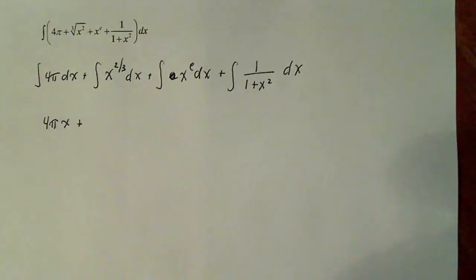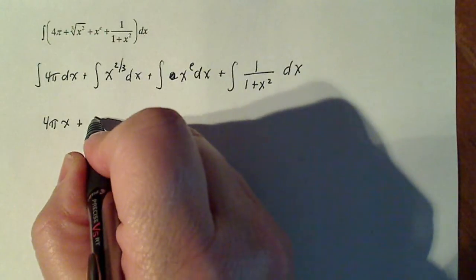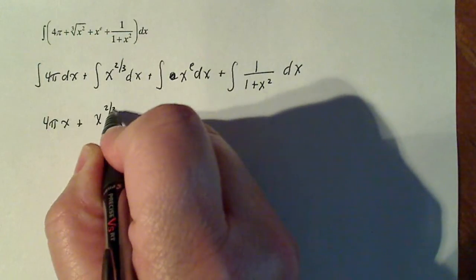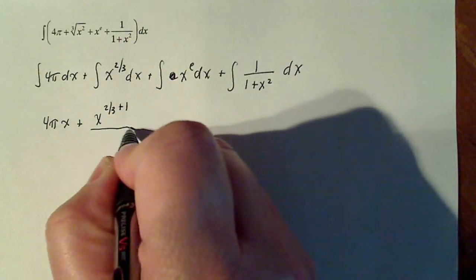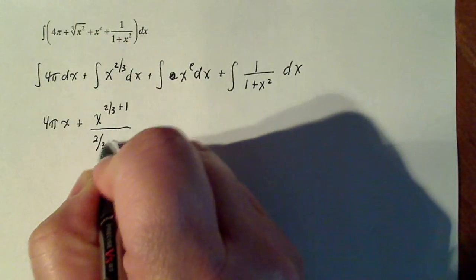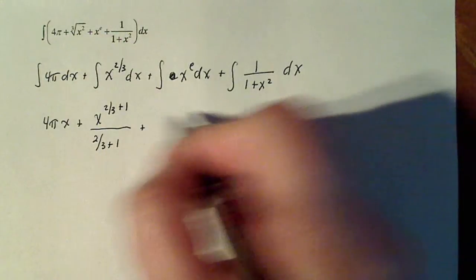Now this is just a variable to a power, a real number power. So that rule says I have to take the power and add one and divide by the new power. Now I'm going to come back later and simplify that, but that's okay for now.